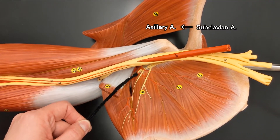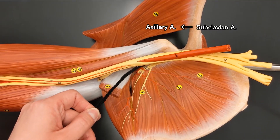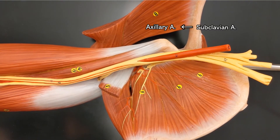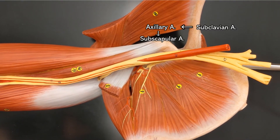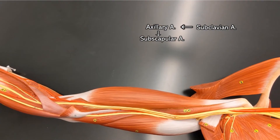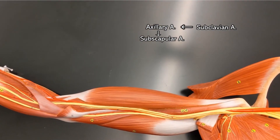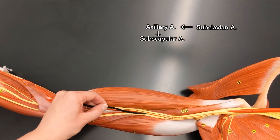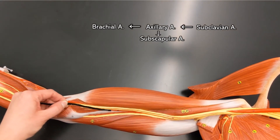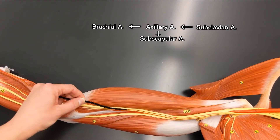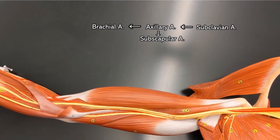Here we can see coming off of the axillary artery is the subscapular artery. Once the axillary artery is out of your armpit and onto your upper arm, it becomes the brachial artery, which is what we're seeing right here. That's the brachial artery — it's under a nerve there.